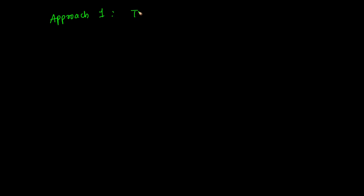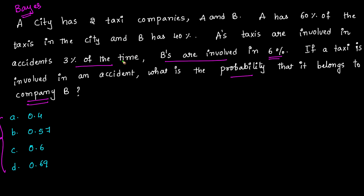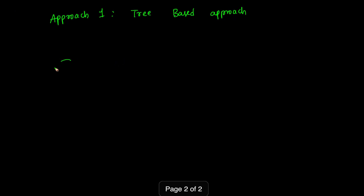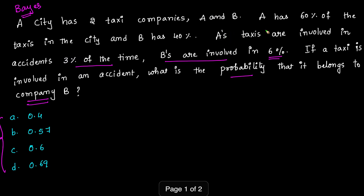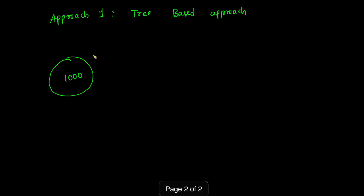The first is a tree-based approach. Let's take a simple example — say there are 1000 taxis in the city. According to the problem, company A has 60% of the taxis, so 60% of 1000 means there are 600 taxis belonging to company A and the remaining 400 belong to company B.